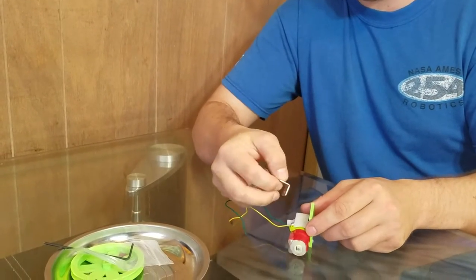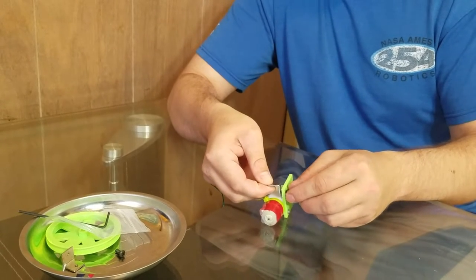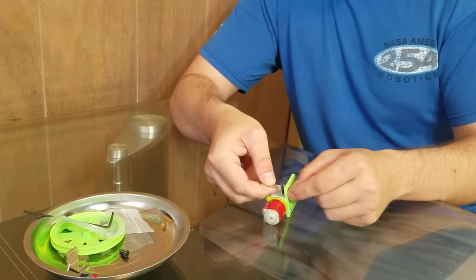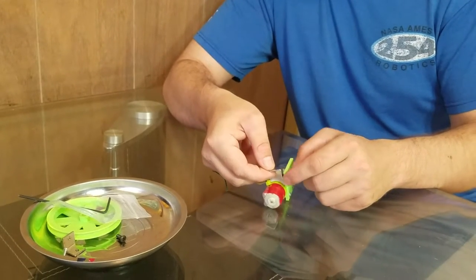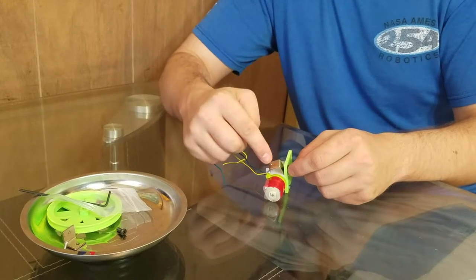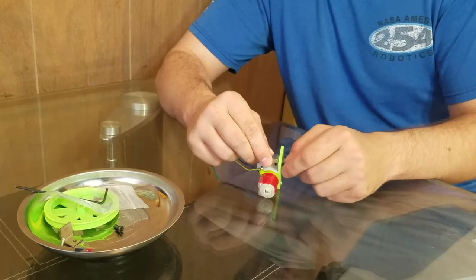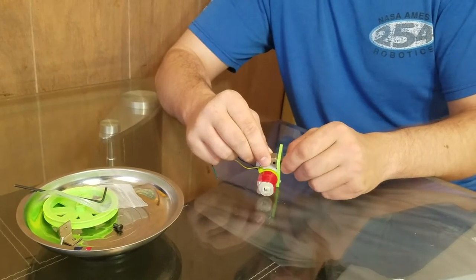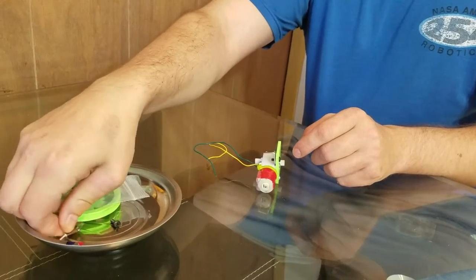We're going to use our fingers to spin the 6-32 bolt and try to catch the angle bracket hole. The angle bracket actually has threads in that hole, so the 6-32 bolt will catch and eventually work its way in. That one was pretty easy.